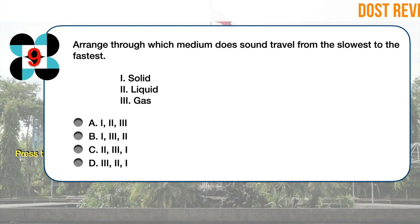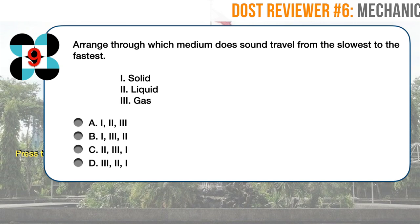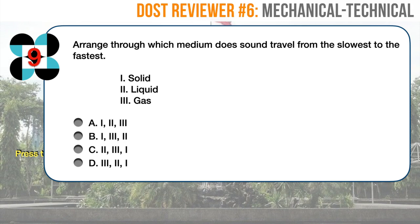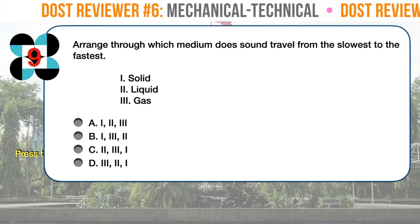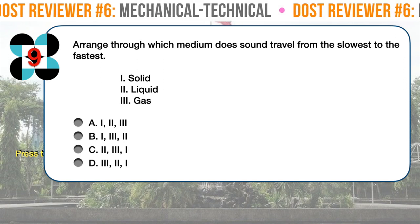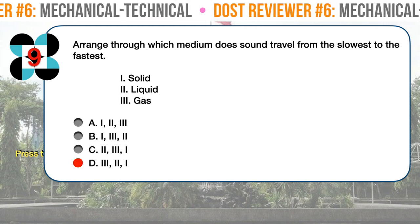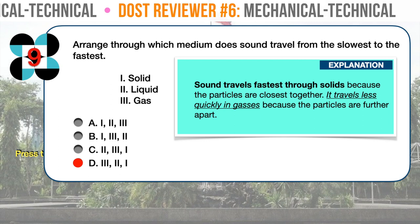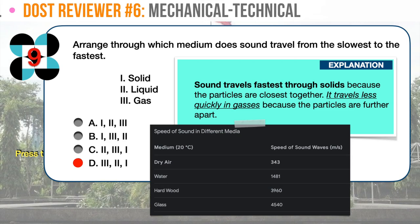Question number nine. Arrange the media through which sound travels from the slowest to the fastest: 1. Solid, 2. Liquid, 3. Gas. The correct answer is D: 3, 2, and 1. Sound travels fastest through solids because the particles are closest together. It travels less quickly in gases because the particles are further apart. Check out the table comparing the speed of sound in different media.